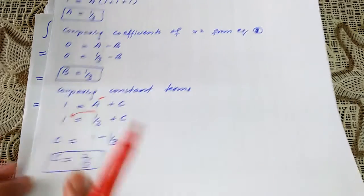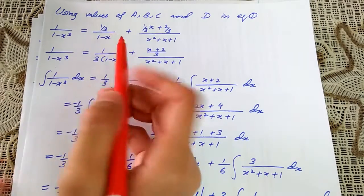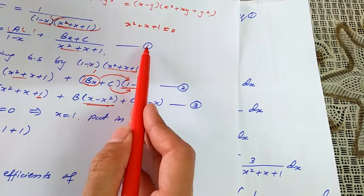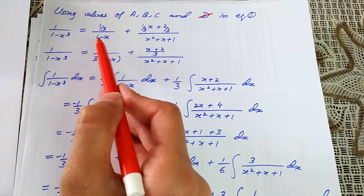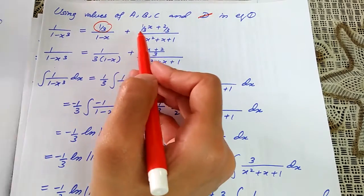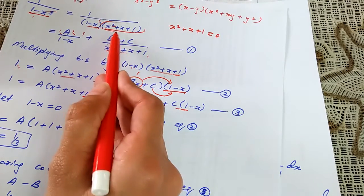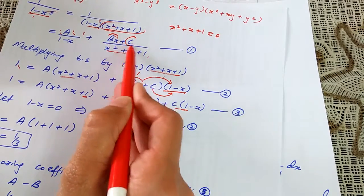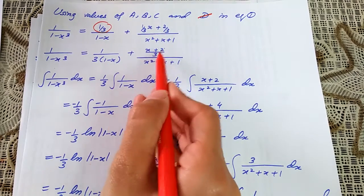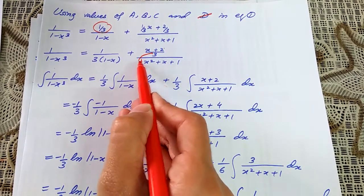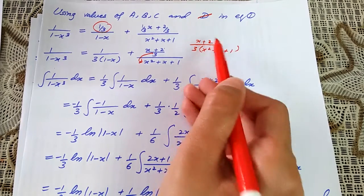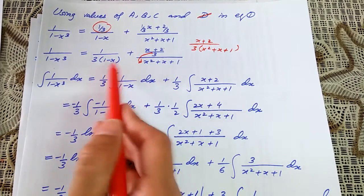Rearranging gives c = 1 - 1/3, so c = 2/3. Now substituting the values of a, b, and c into equation 1, we get 1/(1 - x) replaced with a = 1/3, plus (bx + c)/(x² + x + 1). Simplifying the numerator by taking LCM gives (x + 2) / [3(x² + x + 1)].